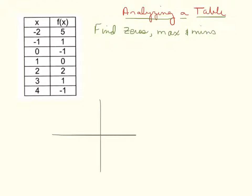When I make my graph, I'm just going to plot the points I'm given. Negative 2 to 5, 3, 4, 5... so there's a point on my graph. And negative 1, 1 is a point on my graph.